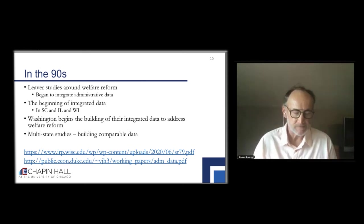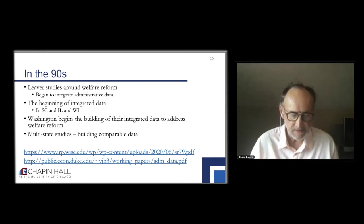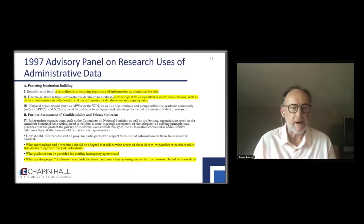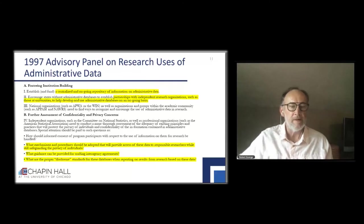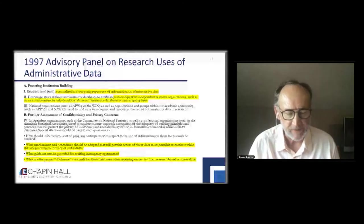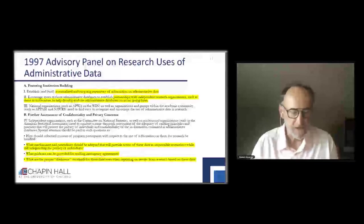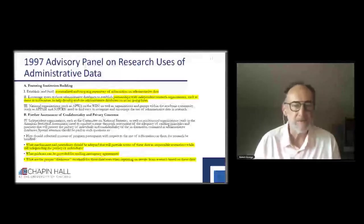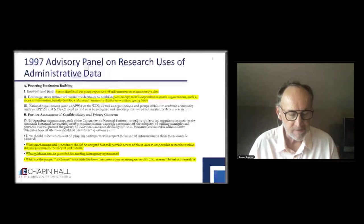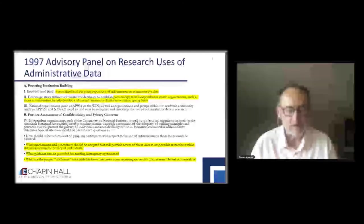There's a link at the bottom which you'll get when you can access the slides, to a nice study that Wisconsin IRP did around leavers. HHS funded the Joint Poverty Research Center at Northwestern University in Chicago and the Advisory Panel on Research Uses of Administrative Data, which put out a set of recommendations that still today pop up in many reports and discussions. The highlighted sections speak to a centralized and ongoing repository of information on administrative data.